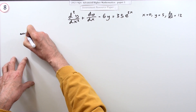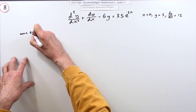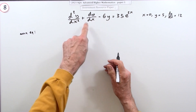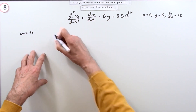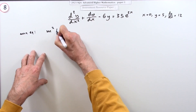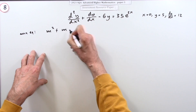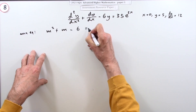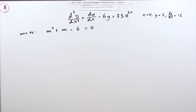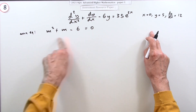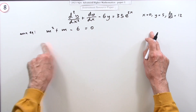For the complementary function, which solves the homogeneous equation, you write down the auxiliary equation made up from the three coefficients. With a leading coefficient of one, that's m² + m − 6 = 0. You don't need to state the derivation to get marks, but it's worth understanding where this comes from.